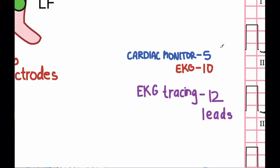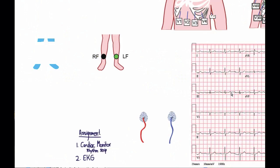The cable for the cardiac monitor has 5 electrodes, and the cable for the EKG has 10 electrodes. The EKG tracing has 12 leads. Let's zoom out and take a better look at this.